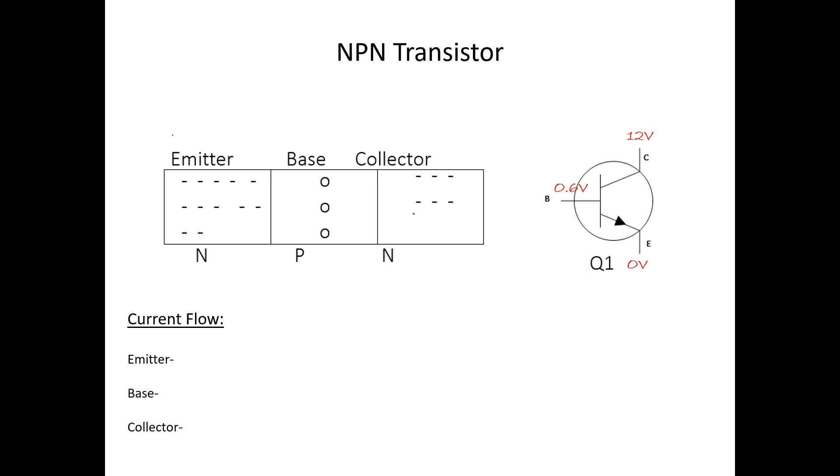Now once a transistor is conducting, there will be current flow from the emitter, via the base, to the collector, because current always flows negative to positive. Now let's briefly discuss the percentages of current flow before we move on.